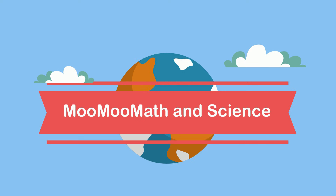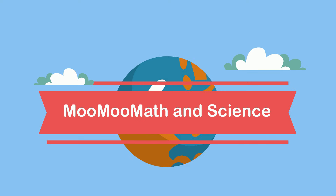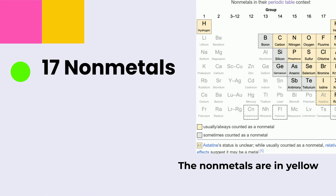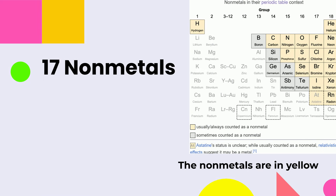Welcome to MooMoo Math and Science. In this video, let's take a look at non-metals. There are 17 non-metals, and if you look at the periodic table, they are found on the right side.